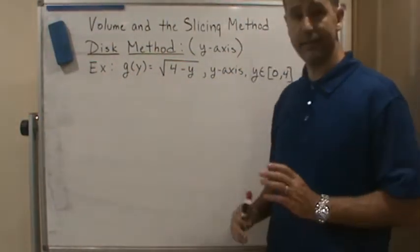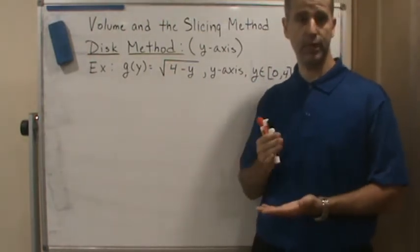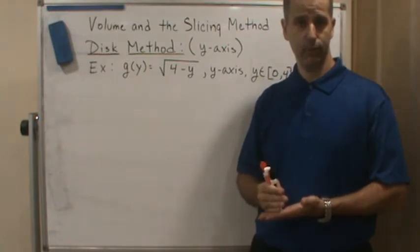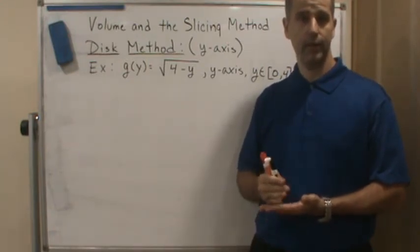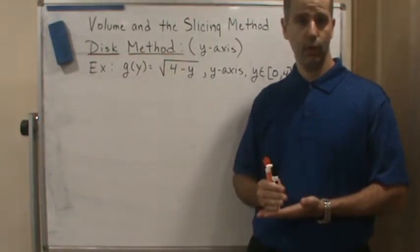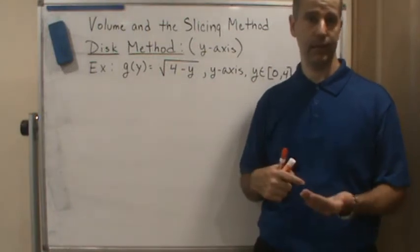So welcome back. In this example, we're going to show how the disk method works when we want to take a region that's bounded by a function. This time we're going to find the volume of the solid of revolution where this region is rotated around the y-axis instead of the x-axis.